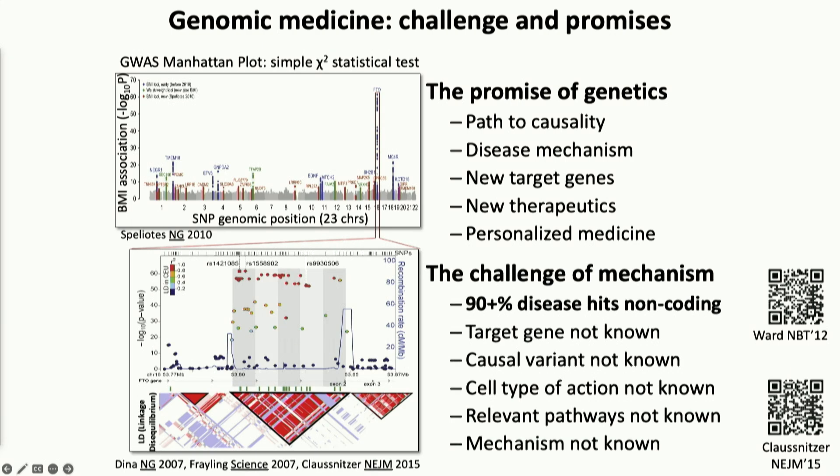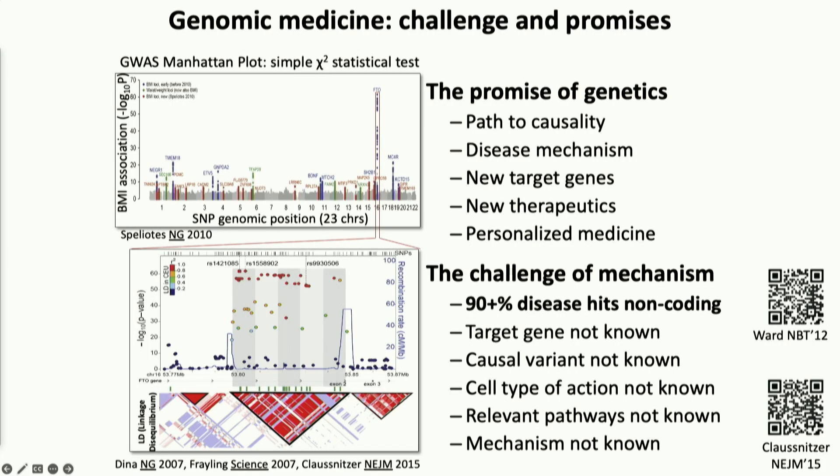But that doesn't tell us how it works. The beauty and the power of genetics is that it doesn't matter what genes are made of — it doesn't matter if they're made of green cheese, genetics will still work. But the challenge is that after you have the genetic association, you have no idea how it works: what cell type, what gene might be the target, what tissue of action. The mechanism is simply unknown. And how do you develop therapeutics without mechanism?